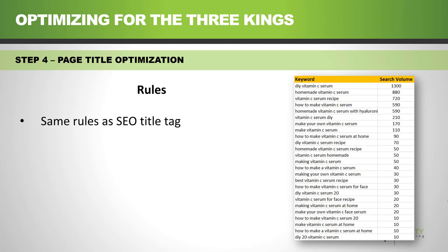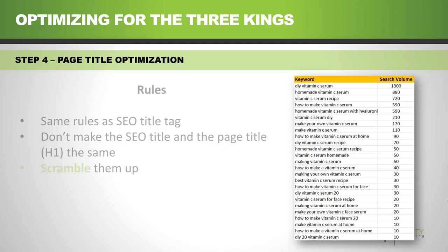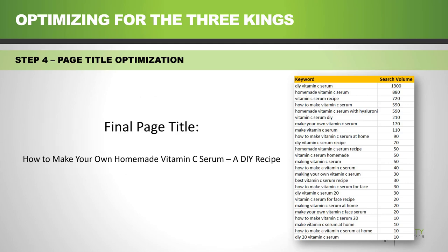The rules for the page title are the same as for the SEO title tag, but just don't make them exactly the same — scramble them up. Here's the final page title that would be used for this keyword research. As you can see, it's readable English, it's not double-counting words, it's different from the SEO title tag, and all four of the top keywords are covered again.